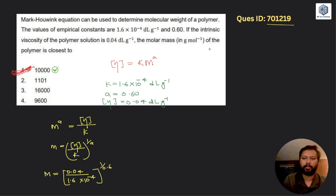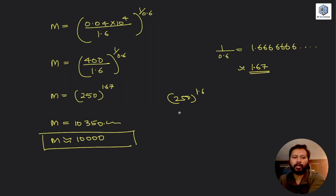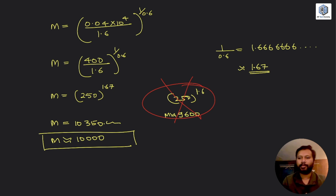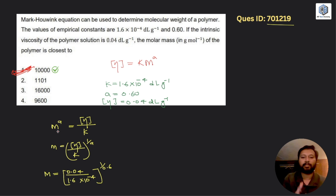That is why the correct answer is option number one, and it is right. The issue is that a few people did 1 divided by 0.6 and used 1.6 as the power instead of 1.67. If you do 250^1.6, your answer comes close to the fourth option, which is 9600. But that is not right — you have to take care of significant figures and round off the value correctly. The answer is option number one, which is correct, and this is also not challengeable.